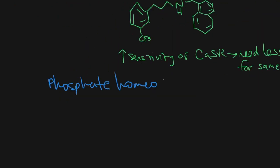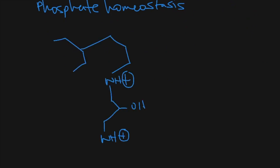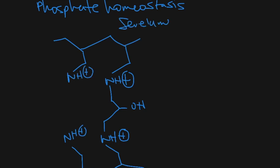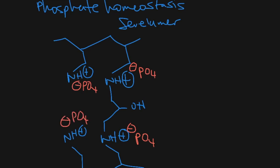The next category is phosphate homeostasis. One drug Dr. Jang showed us is sevelamer. The way it works: it has all these positive charges on the nitrogen amines, and the positive charge attracts the negatively charged phosphate — opposite charges attract. The way to remember this structure: it looks like a spider web of amines. So sevelamer looks like a spider web of amines.